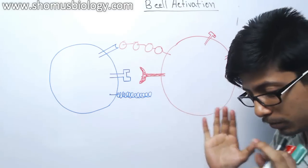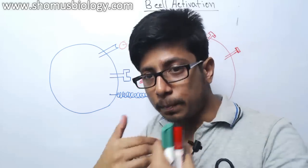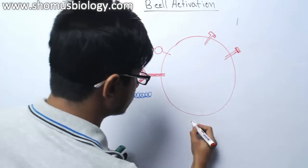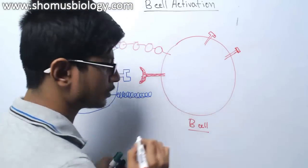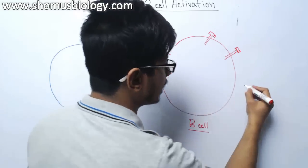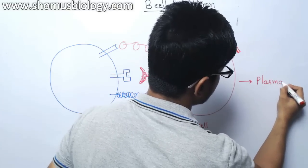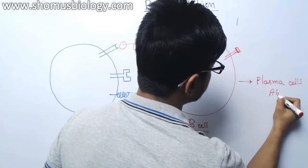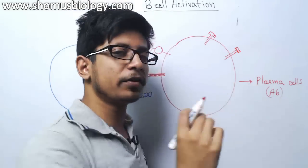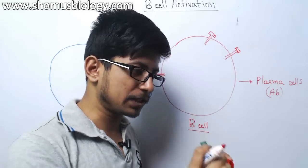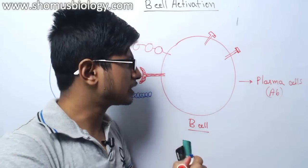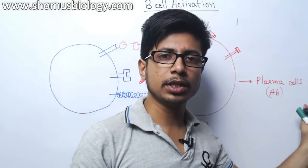B cells are responsible for the humoral side of immunity because B cells have the capability of converting themselves into what is known as plasma cells. Plasma cells are antibody-producing factories of our body that start producing antibodies. Those antibodies are very specific against a specific pathogen — they can go against the pathogen, interact with it, and cause several destruction measures.